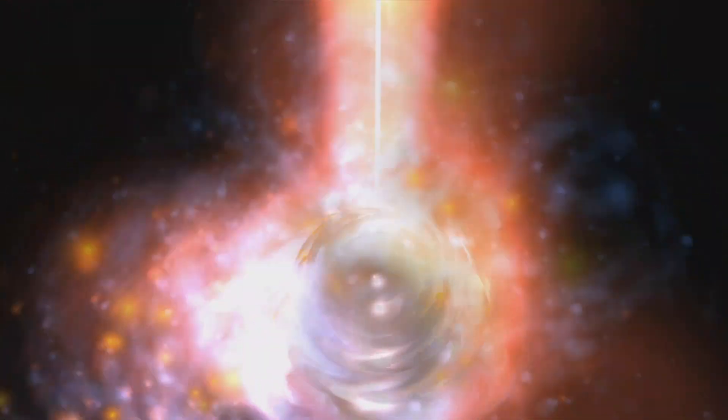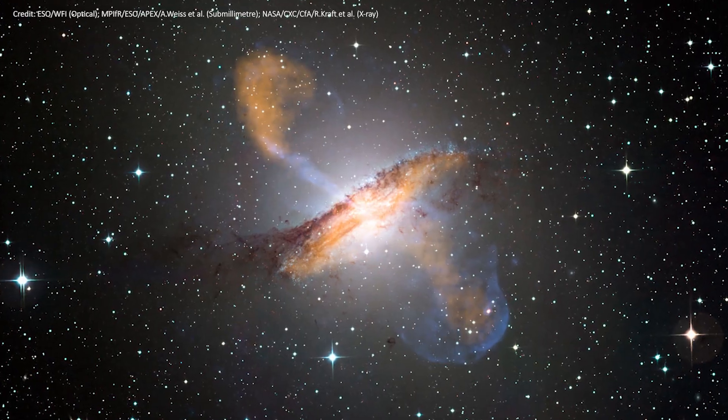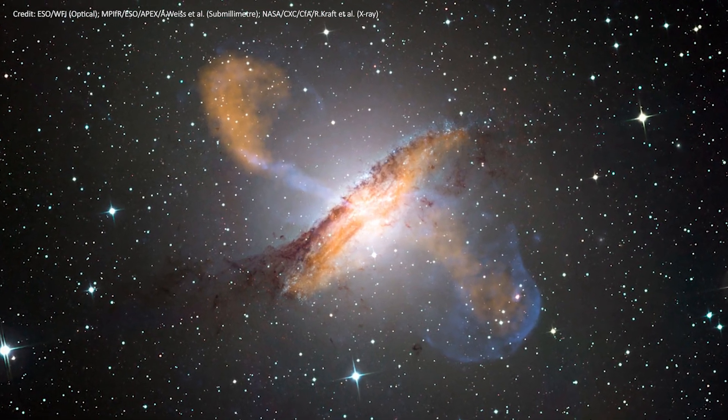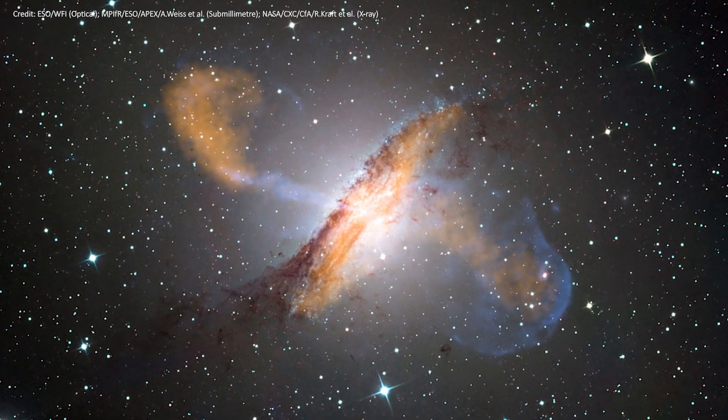Matter from the dense central parts of the galaxy releases vast amounts of energy as it falls towards the black hole. The powerful jet extends about 25,000 light years away from the center and might be the reason why this galaxy is twisted.